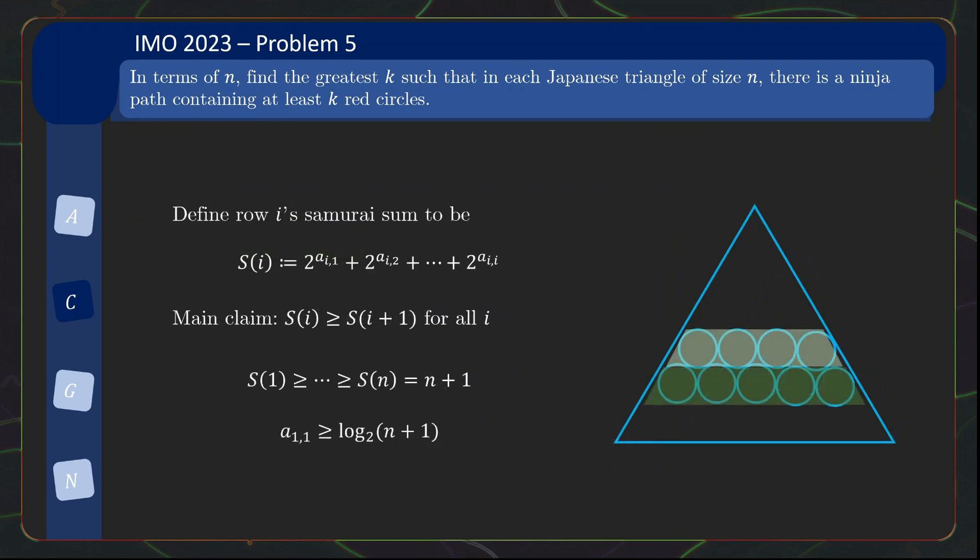What is even more creative is that the contestant should instead look at defining a level quantity and study its behaviour moving up the triangle, which is yet another intricate argument in itself.